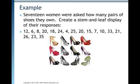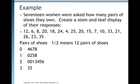Here's an example not from your book. Seventeen women were asked how many pairs of shoes they own — create a stem-and-leaf display of their responses: 12, 6, 20, 18, 24, and so on. We call it 'pairs of shoes' and first set up our stems, which are the tens digit. For numbers like 6 and 8, you need a 0 for the tens digit. Then for numbers like 12, you want a 1 stem; for the 20s a 2 stem; for the 30s a 3 stem. Next to the 0 stem, list the single-digit numbers in order: 4, 6, 7, 8.